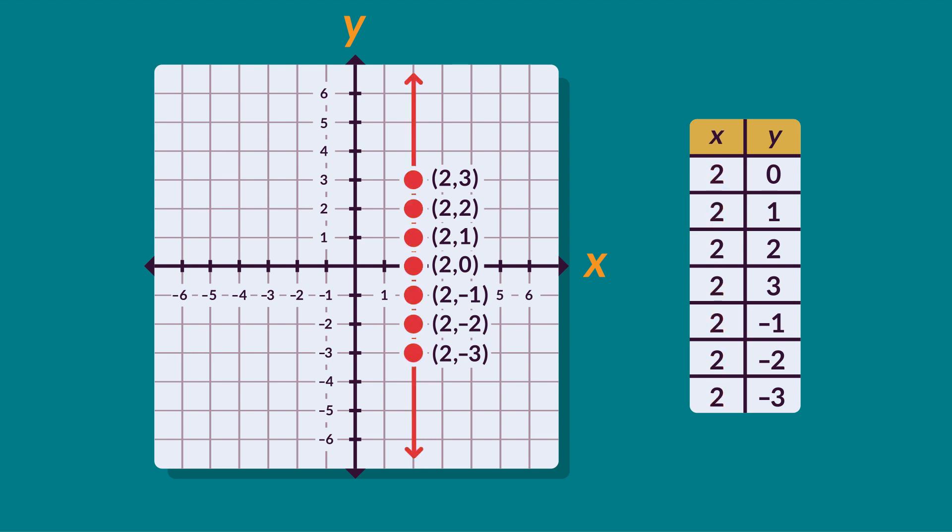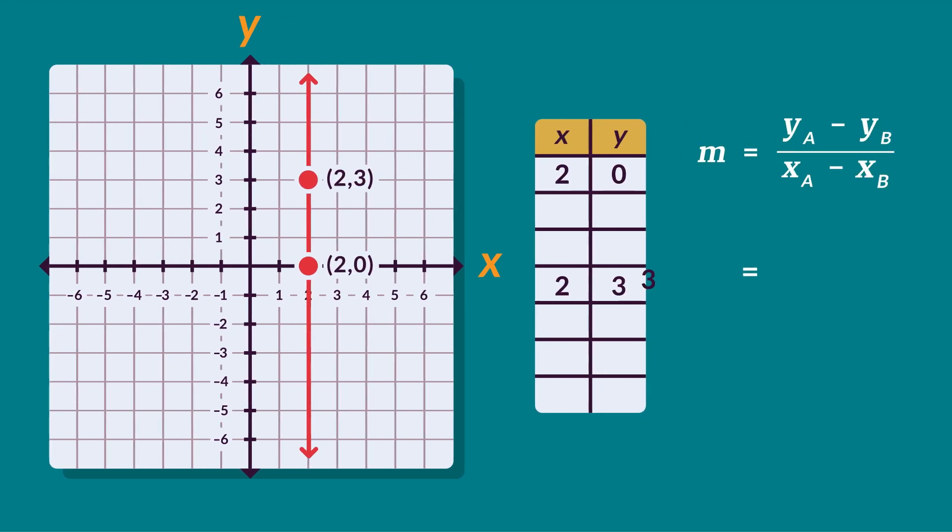If you tried to calculate the gradient between the points (2,3) and (2,0), you'd be trying to divide by a difference in x-values which are all equal to 0.